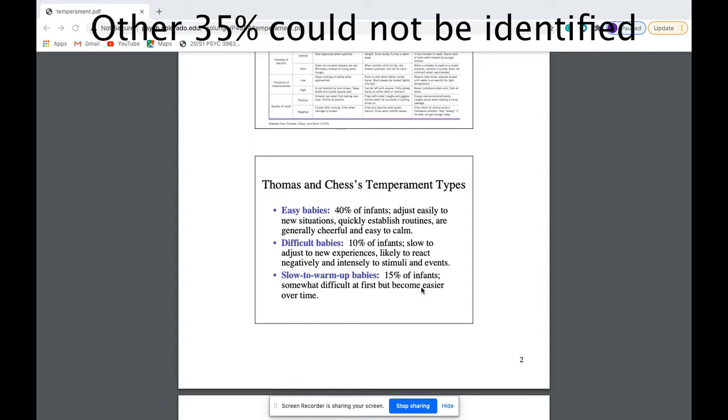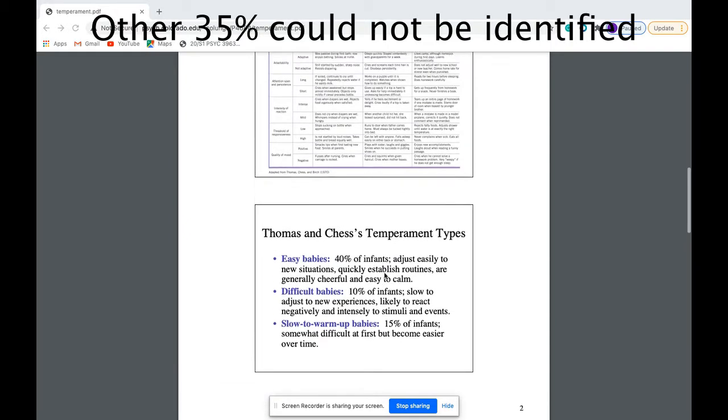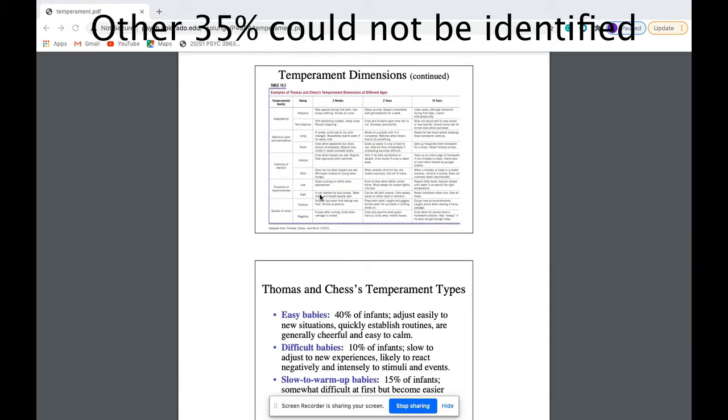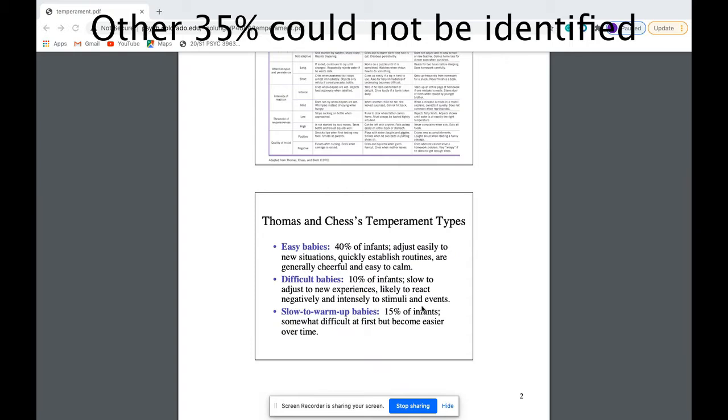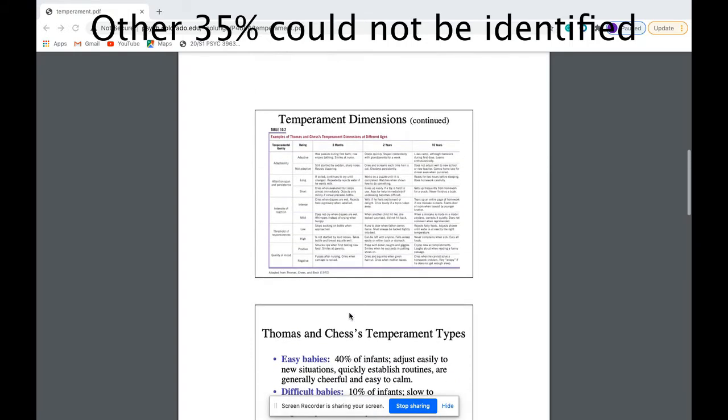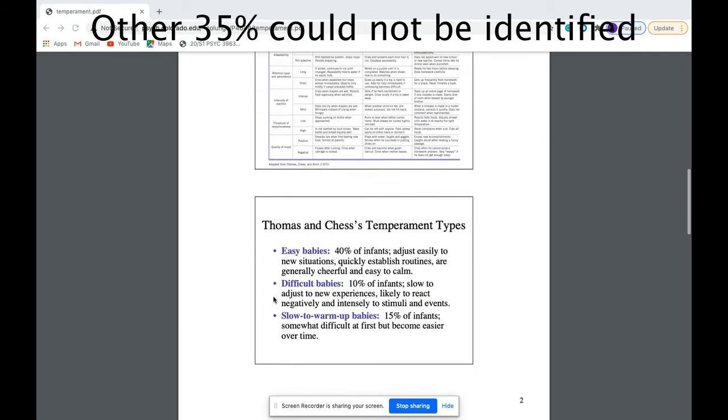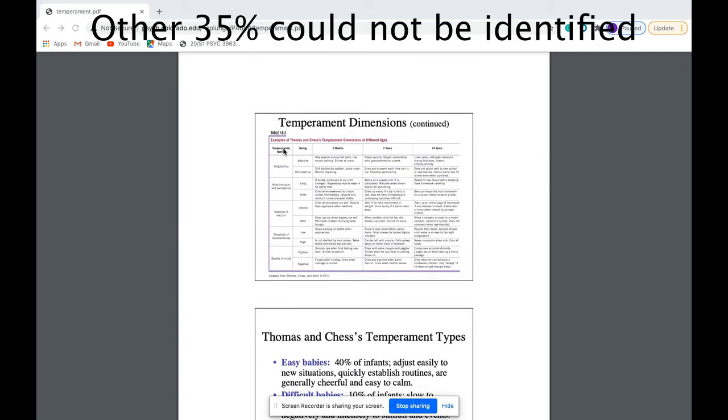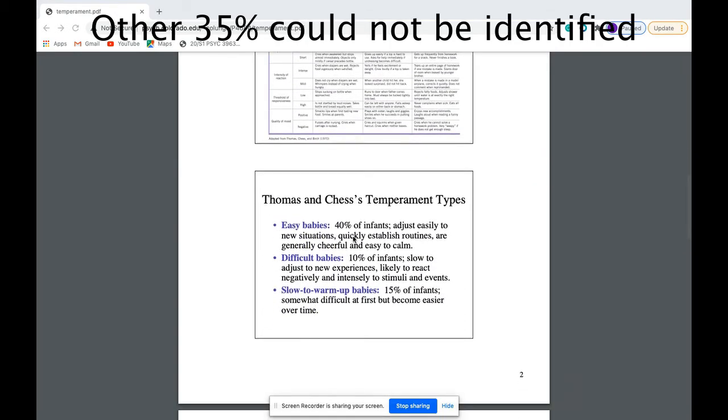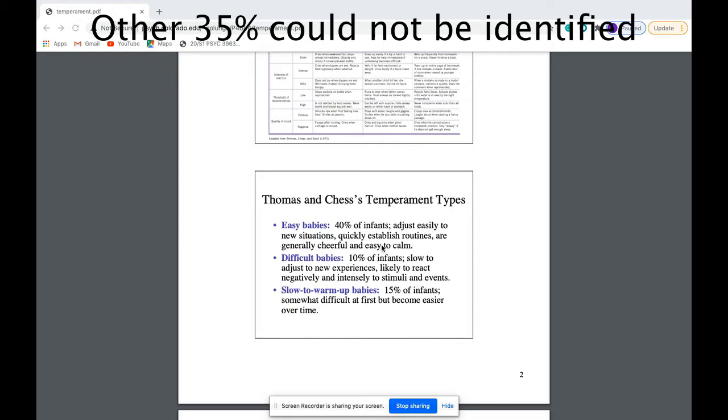In this case, we can see that the characteristics or the description goes off exactly from what we saw in the nine characteristics. The easy babies, well, they adjust easily to new situations, quickly established routines, and are generally cheerful and easy to calm. As you can see here, they adjust easily to new situations.